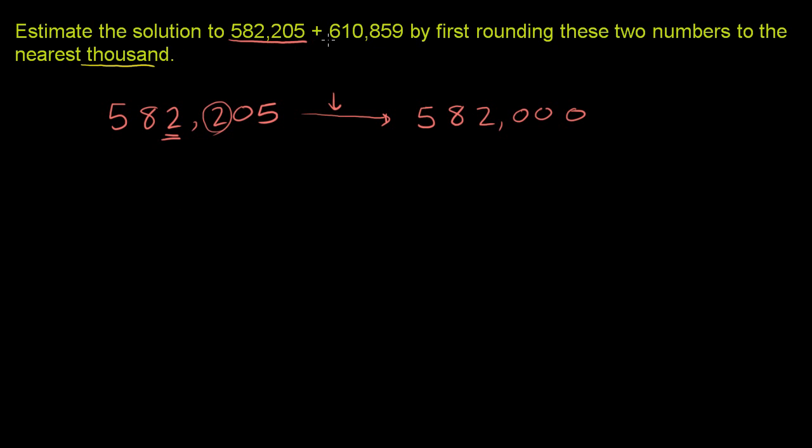Now we have 610,859. Same drill. Go to the thousands place. That's the 0 right there. Look one place below the thousands place. This is that 8 right there. If this is 5 or greater, you round up. Less than 5, round down.